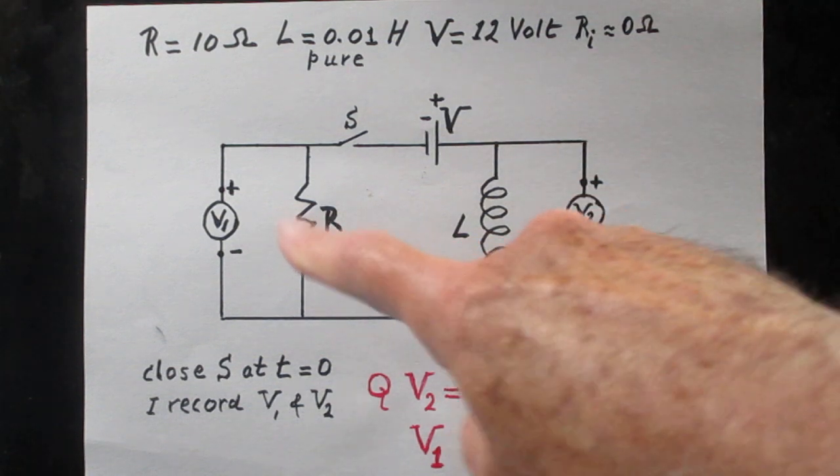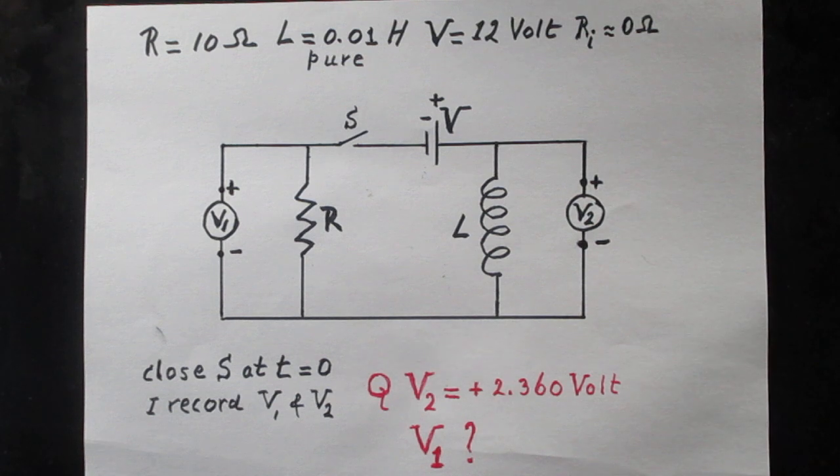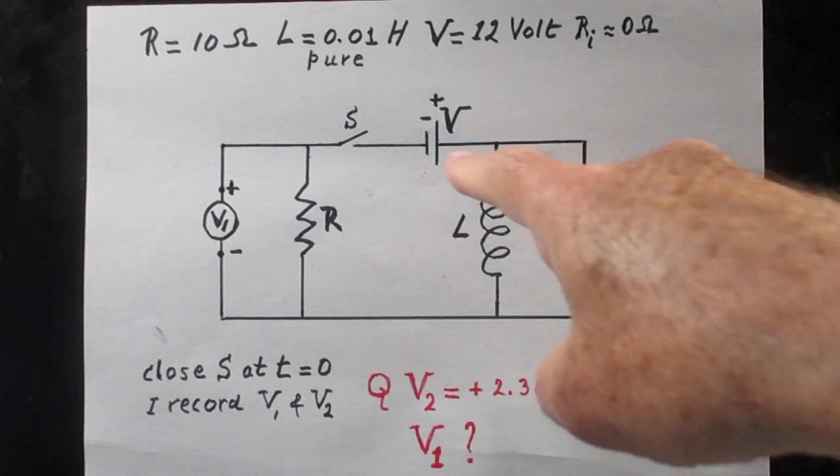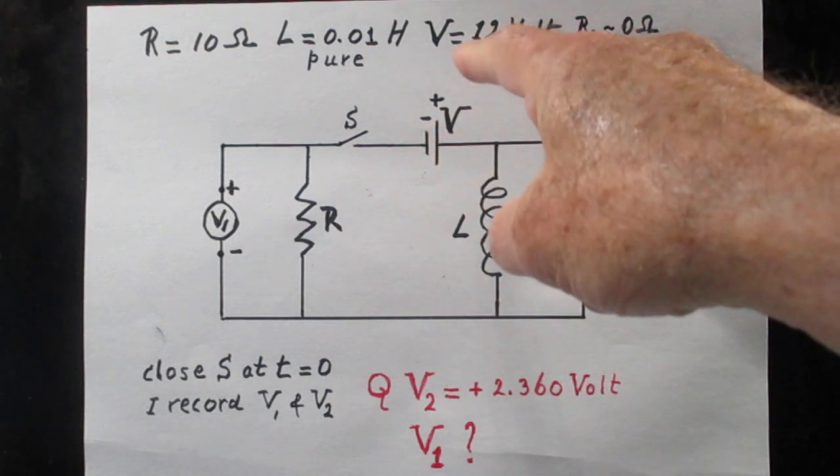We have a circuit here which is self-explanatory. There is a battery here, a car battery, 12 volts.